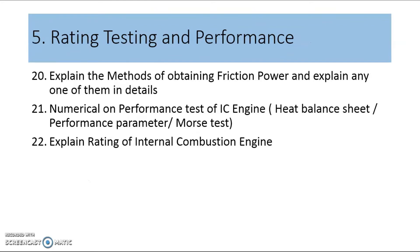Unit five is very important because if you see different GTU question papers, numericals from the performance and testing of IC engines are present. Question number 20 is: explain the methods of obtaining frictional power and explain any one in detail. There are various methods of frictional power measurement in our syllabus — out of those, you need to explain one like the Morse test, Willan's line method, or any other method. In five or more years of IC engine papers, definitely one numerical is based on the performance test of an IC engine — either heat balance sheet type, performance parameter calculation type, or Morse test based. Last question from this unit is: explain the rating of an internal combustion engine.